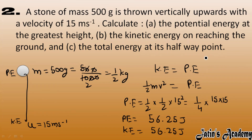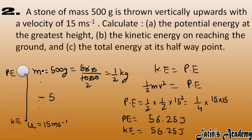Now we calculate the total energy at the halfway point. According to conservation of energy, at each and every point the energy remains constant. So at the midway point, we have the same total energy — at the maximum height it's in the form of potential energy, at the lowest point it's kinetic energy, and at the midway it's a mixture of both. But total energy remains the same: 56.25 joules.